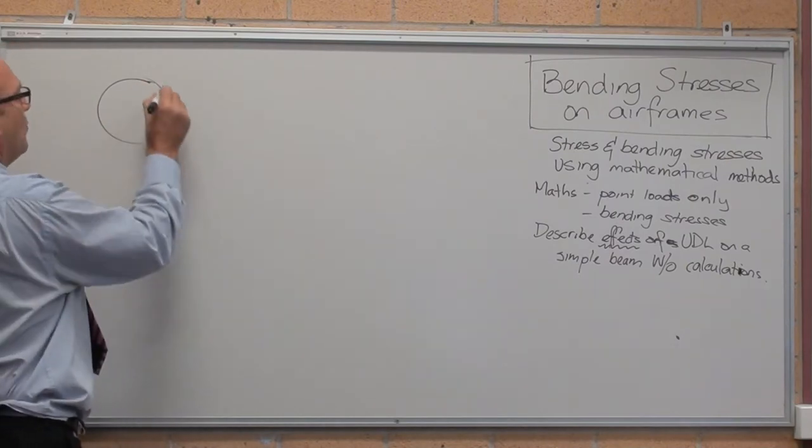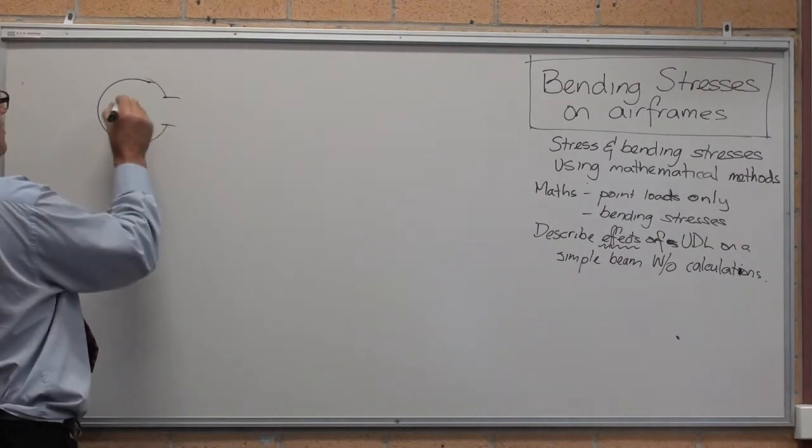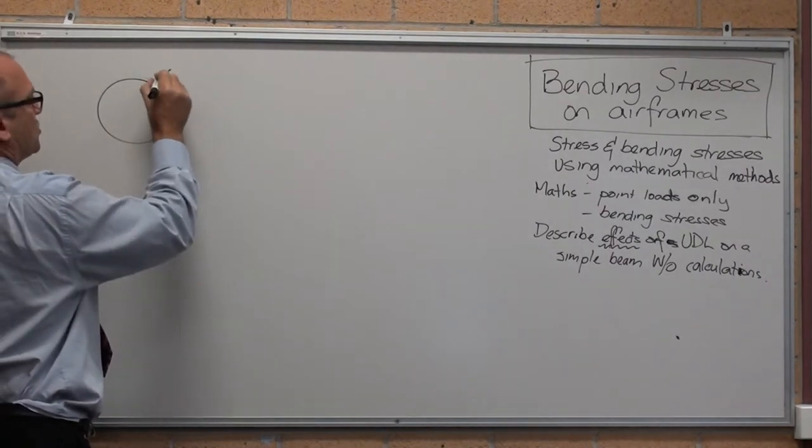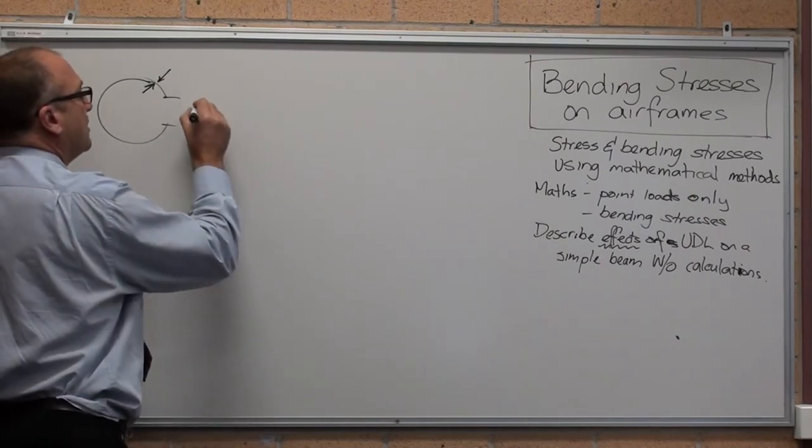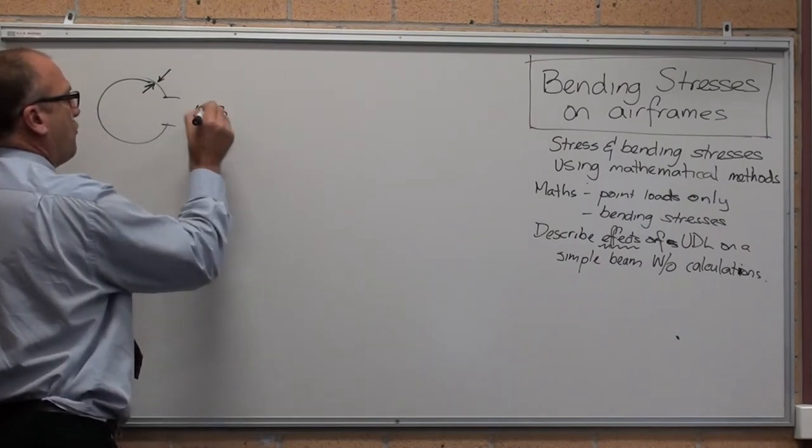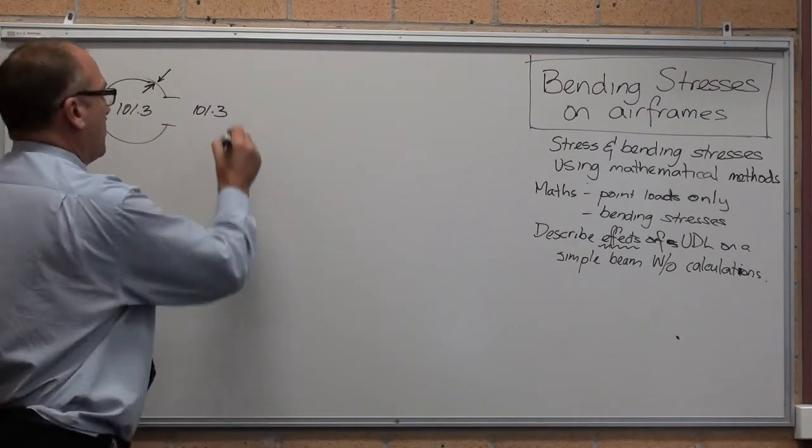When the aircraft's parked on the tarmac with the door open, the pressure inside equals the pressure outside. That's at 101.3 kilopascals, assuming it's at sea level.